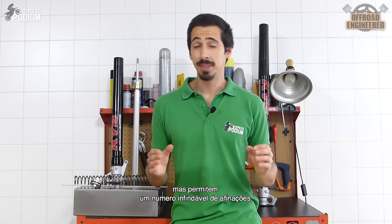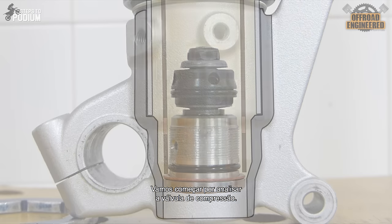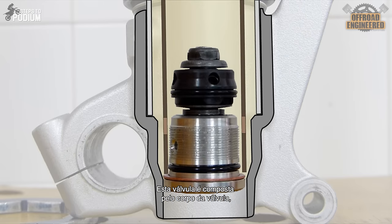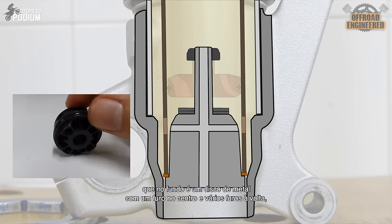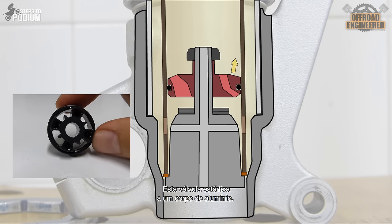These valves are quite simple, but they can be tuned in endless ways. Let's take a look at the compression valve. This valve is composed of a valve body, which is a metal disc with a center hole and outer holes, where the oil goes through and is attached to an aluminum body.